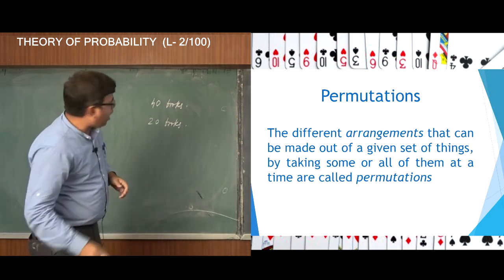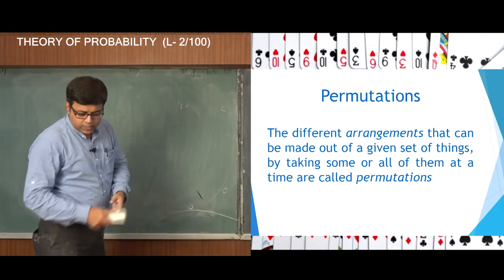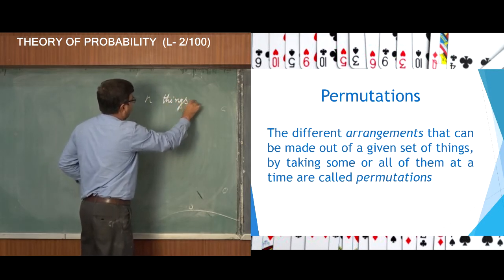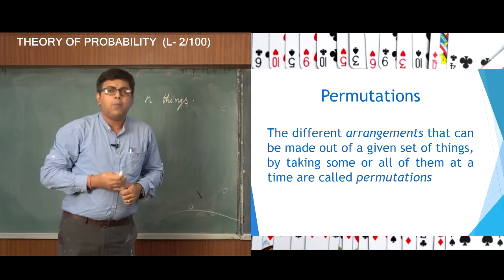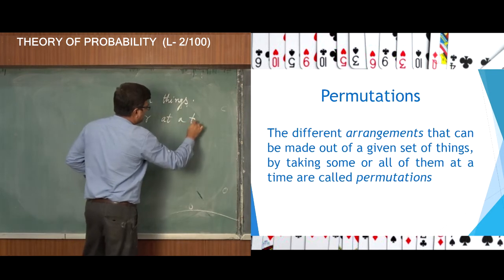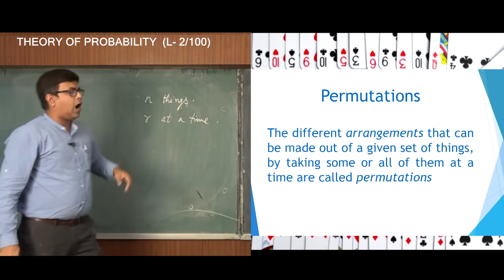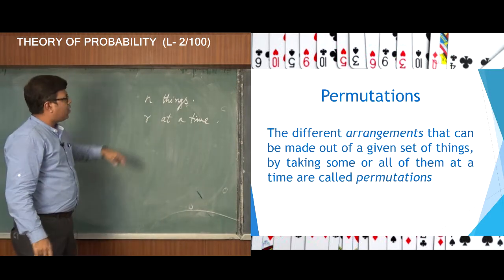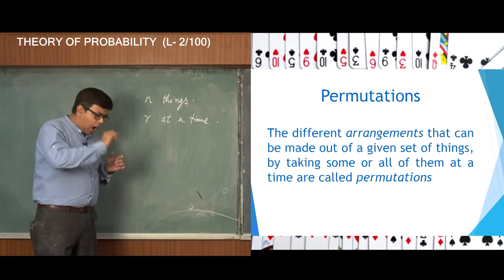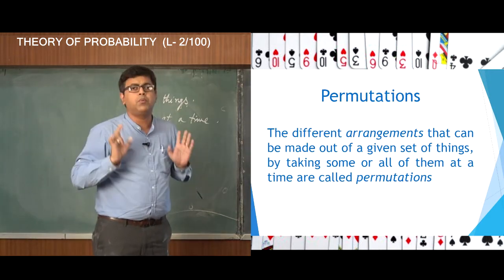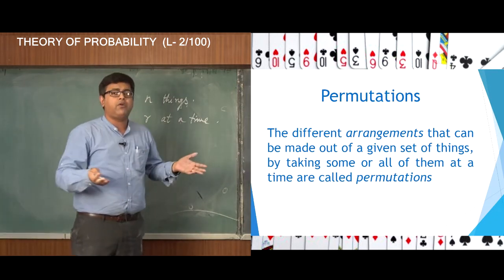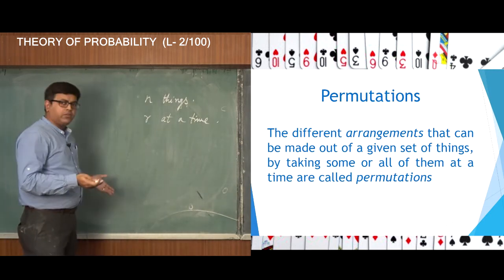Let's take up the most basic definition. Say we have n things and I want to arrange these n things by taking r at a time. This concept of arranging n things by taking r at a time is exactly the same as filling up r different boxes with n different things. We have learnt the fundamental principle, so we will be able to answer this question.